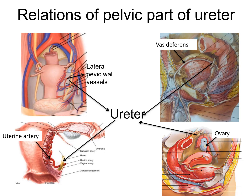Relations of the pelvic part of ureter. The pelvic part of ureter crosses in front of all the vessels and nerves of the lateral pelvic wall. In males, it is related to the vas deferens near the base of the urinary bladder, where the vas deferens lies in front of the ureter and crosses it from lateral to medial side. In females, it is related to the ovaries and forms the posterior boundary of the ovarian fossa. In females, it is also related to the uterine artery near the uterine cervix, where the uterine artery lies in front of and above the ureter. This is one of the sites where ureters are commonly injured during a hysterectomy.